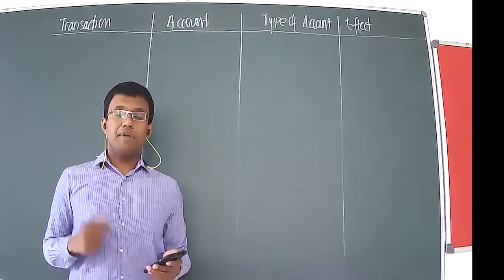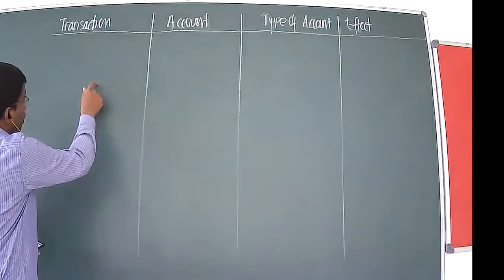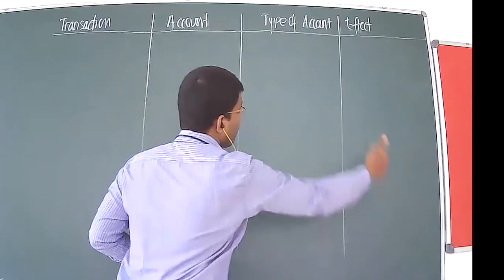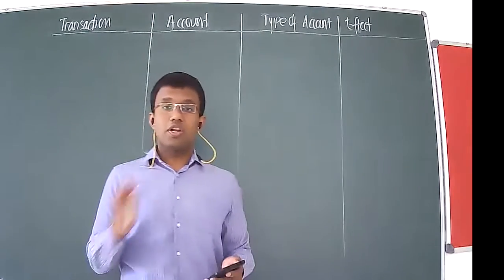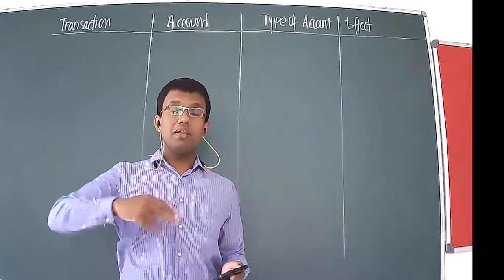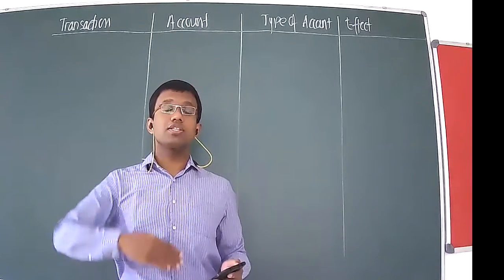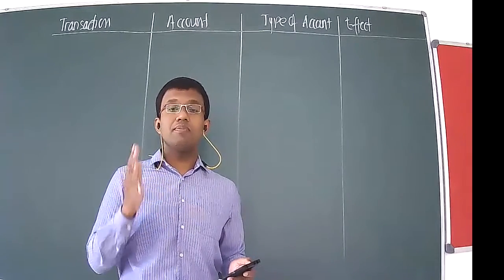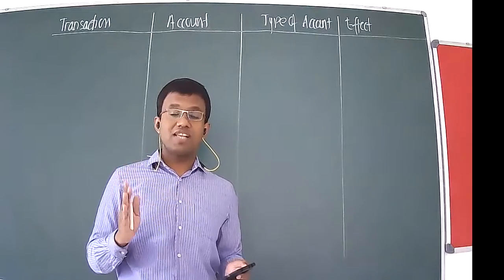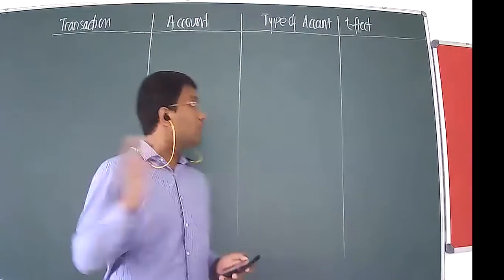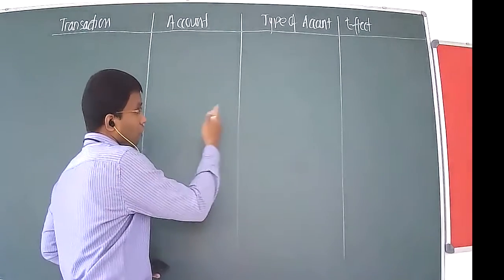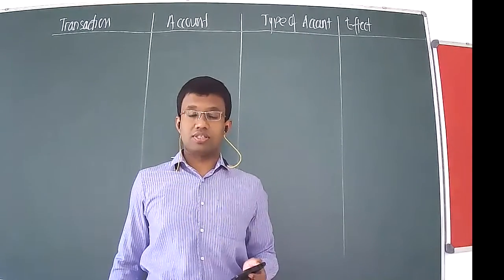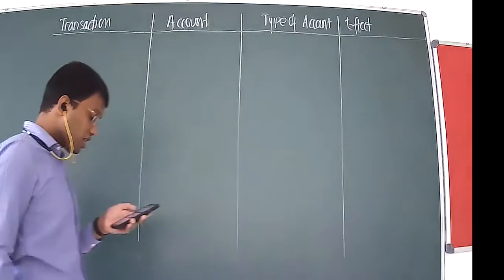I hope all of you have divided your page into four columns. The heading for the first column is 'Transaction', the second is 'Account', the third is 'Type of Account', and the last column is 'Effect'. Now we will start off with the entries — learning how to prepare journals and ledgers — but first we'll practice identifying accounts, their types, and the effect based on the golden rules.